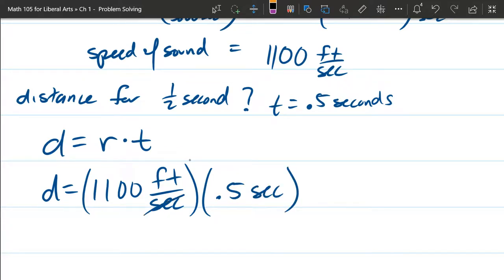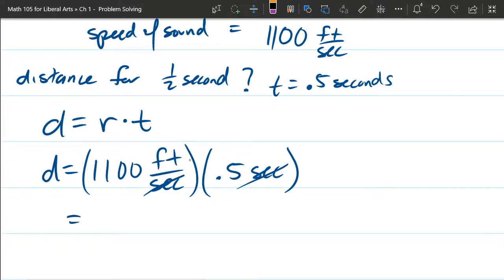So right away I can see the units are going to cancel right here. So we've got multiply by seconds, divide by seconds. And now, what's 1,100 times one half, or 0.5, that'll be half of that. And the only units remaining are feet.